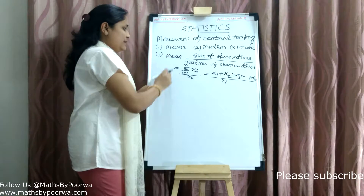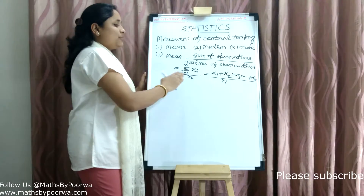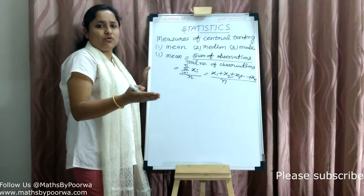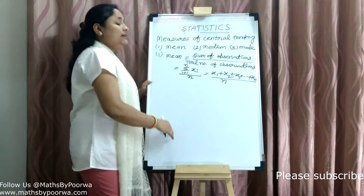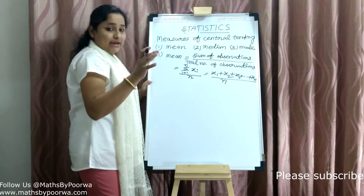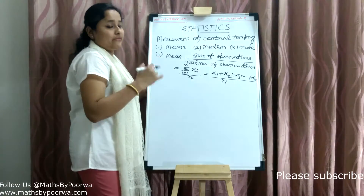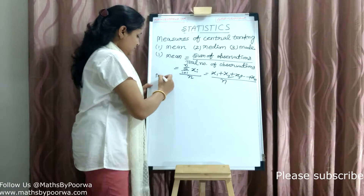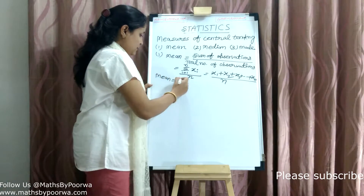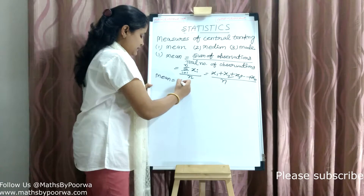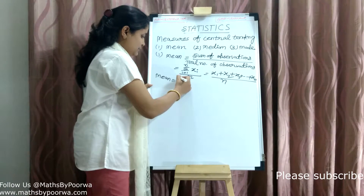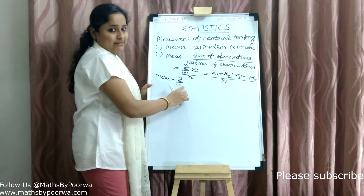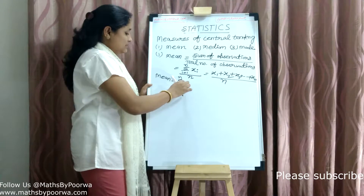First, mean — जब भी आपको simple values दी हो या data दिया हुआ है, तब आप यह formula apply करेंगे. And when frequencies are given — जब भी frequencies भी given होंगी — then mean will be equal to sigma i equals 1 to n. इसको आप sigma भी पढ़ते हैं, summation भी पढ़ सकते हैं.